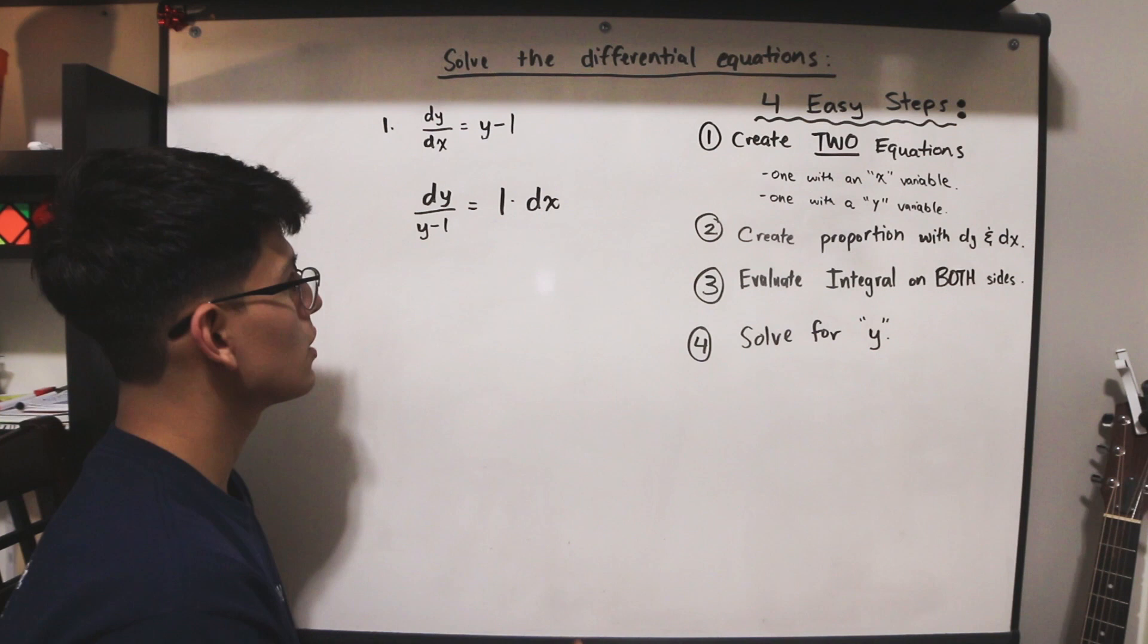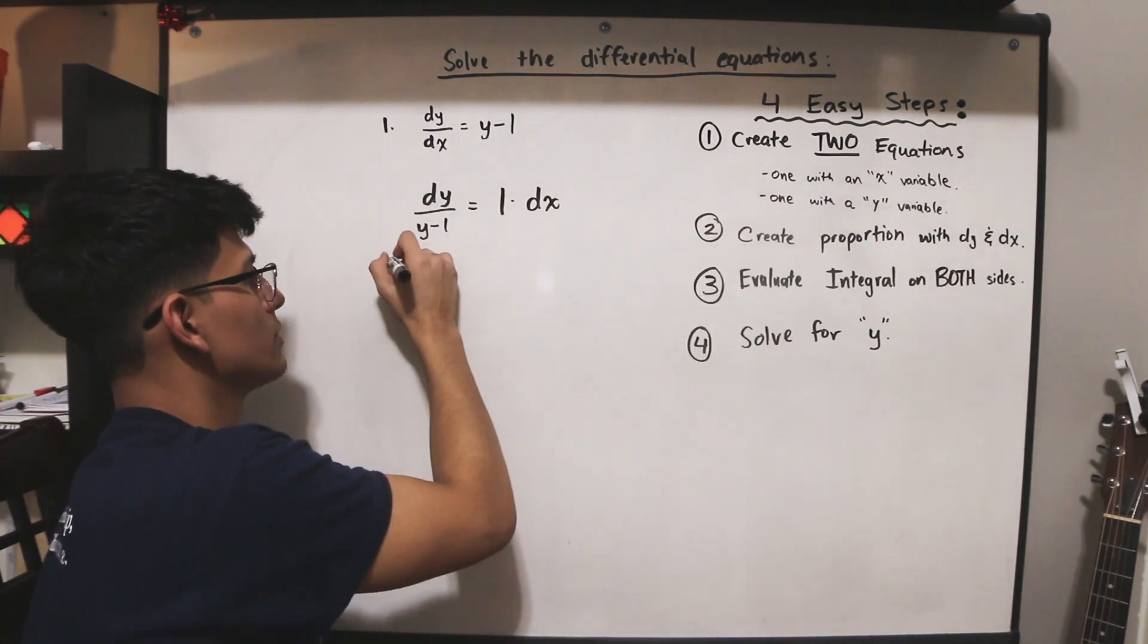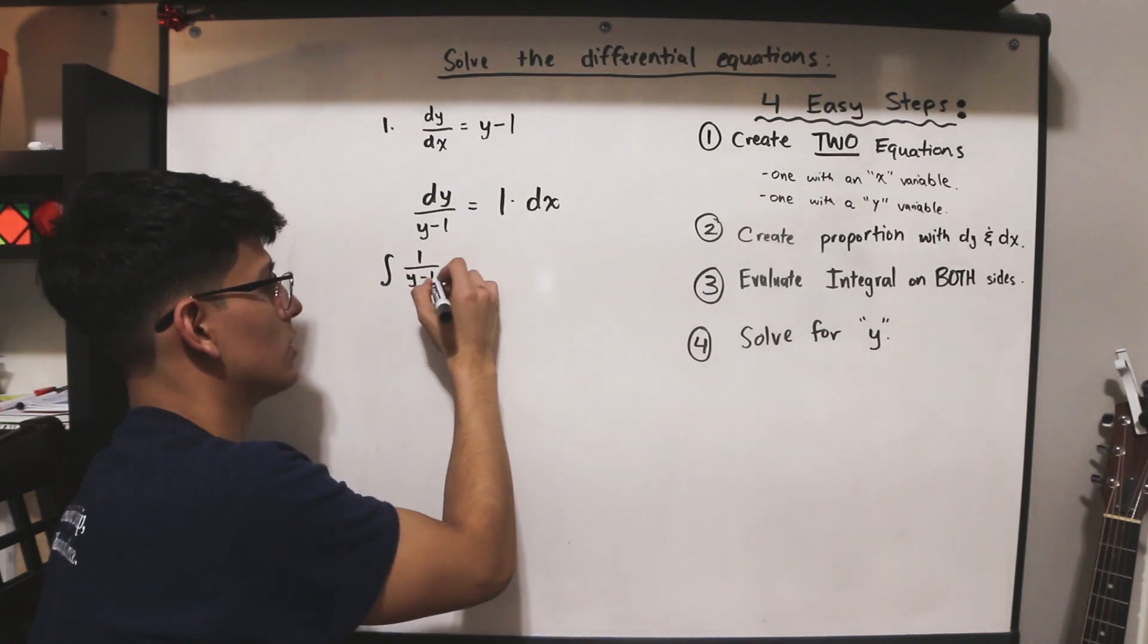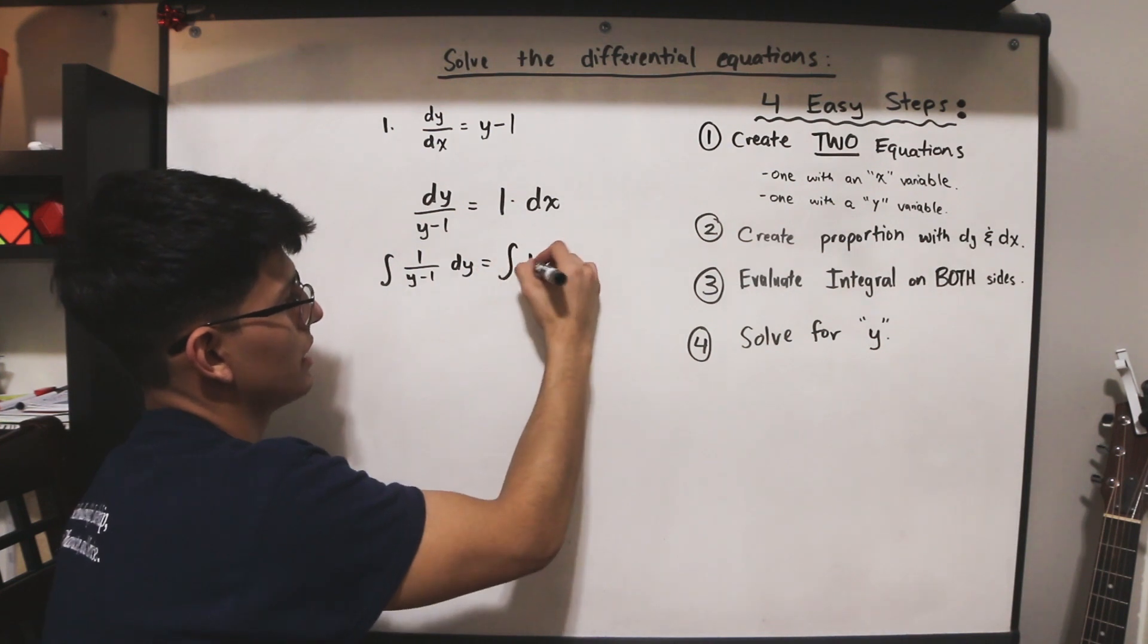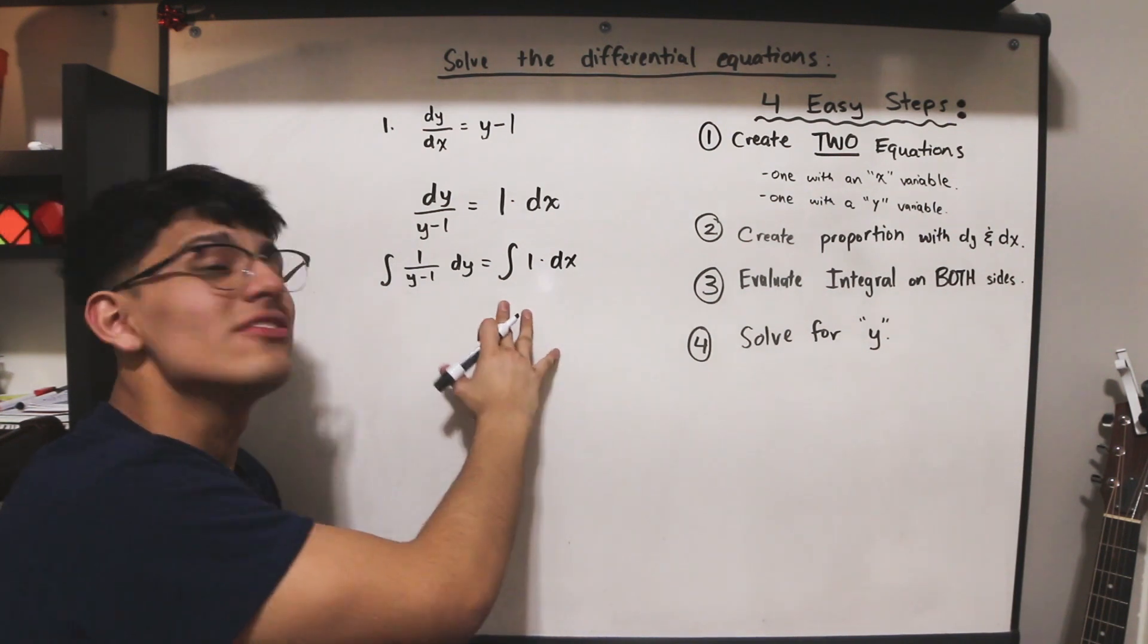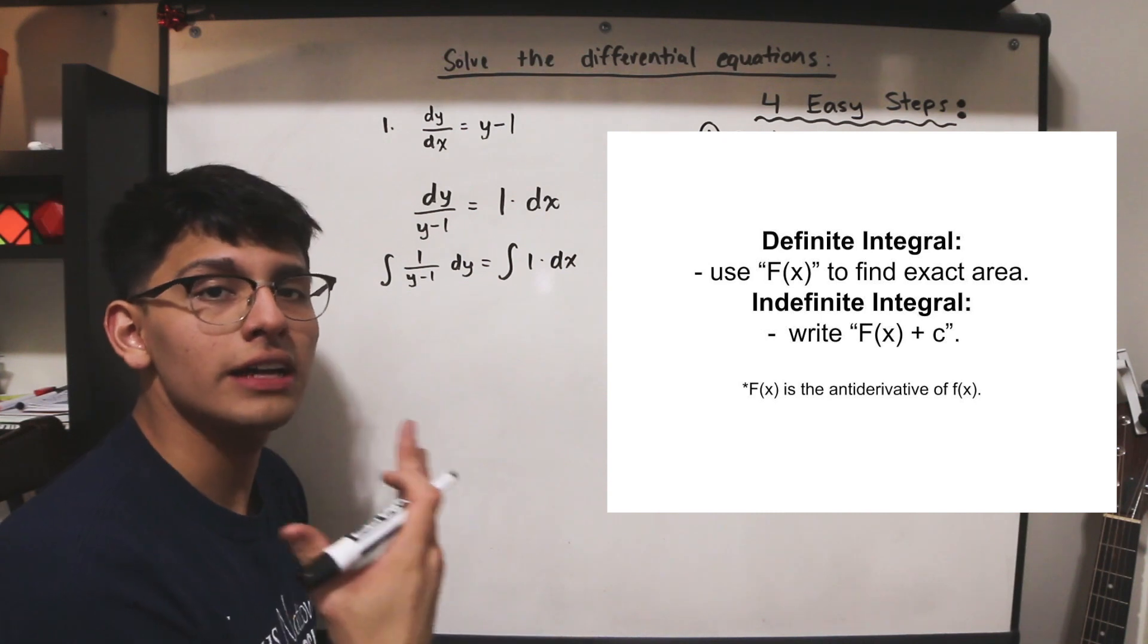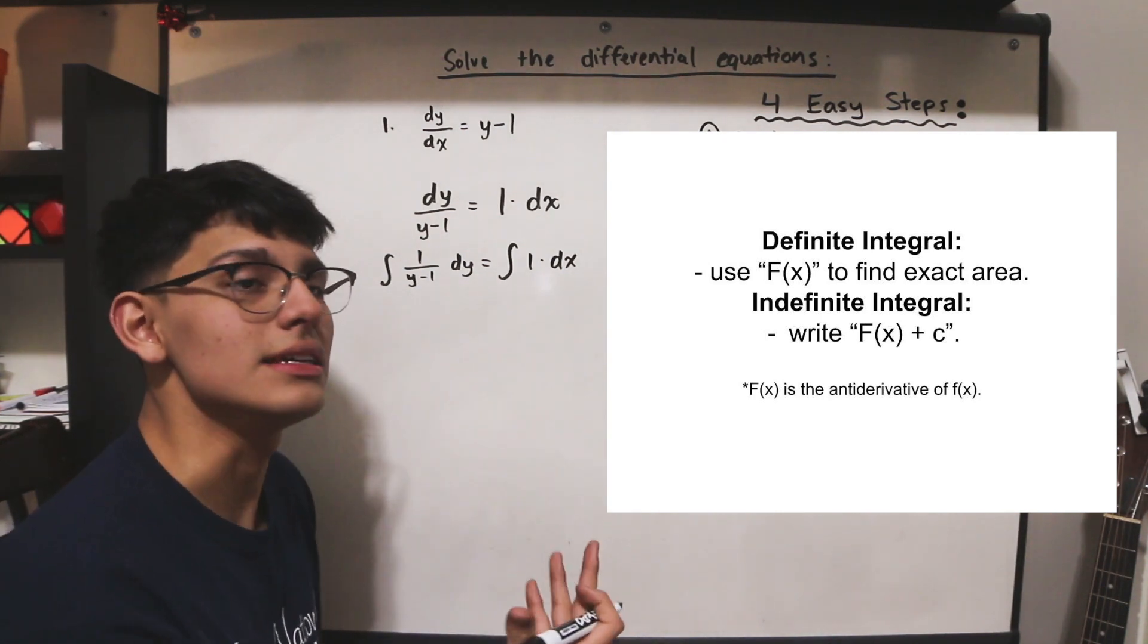So now we're going to evaluate the integral on both sides. So we're going to evaluate the integral for the y side. So I'm just going to rewrite this as 1 over y minus 1 dy, and I'm going to evaluate this side as the integral of 1 dx. We have to keep in mind that these aren't definite integrals, these are indefinite integrals, which means that when we find the antiderivative of each of these sides, we're going to have to add a constant, c.